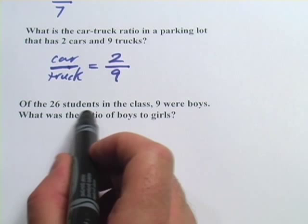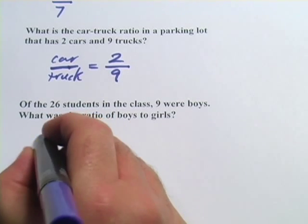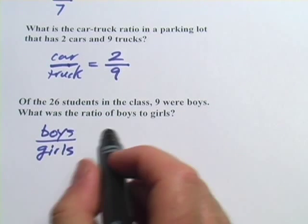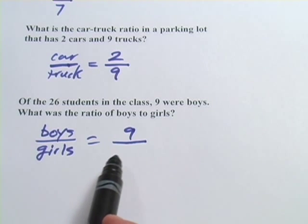This one says of the 26 students in the class, nine were boys. What was the ratio of boys to girls? So we want boys to girls, and we know boys, so we have nine. But we don't know girls, and if I were just to stick the 26 on there, it would not work.